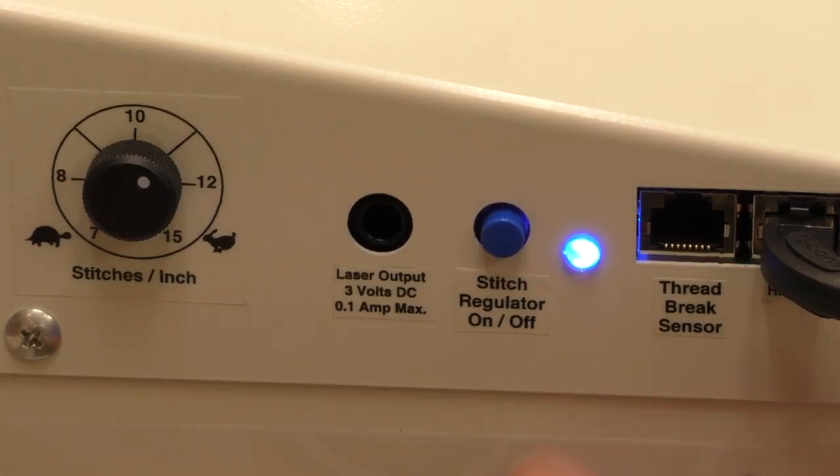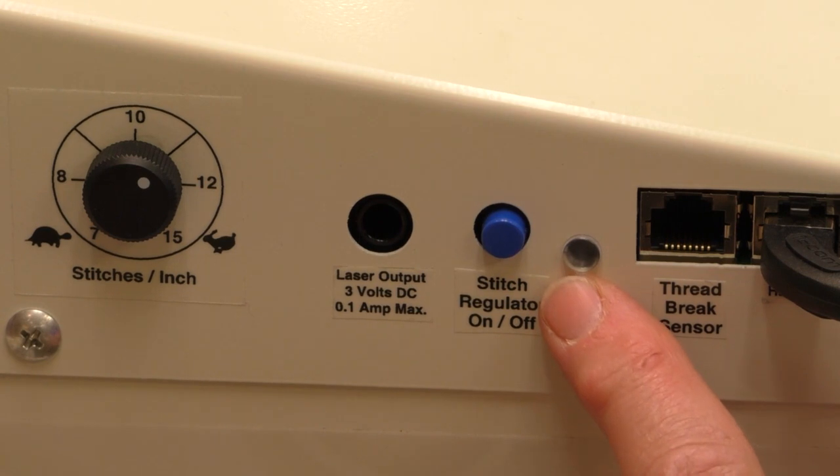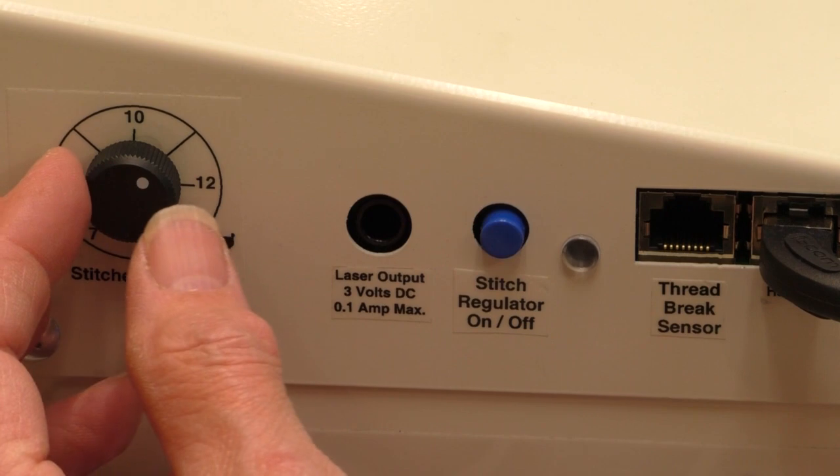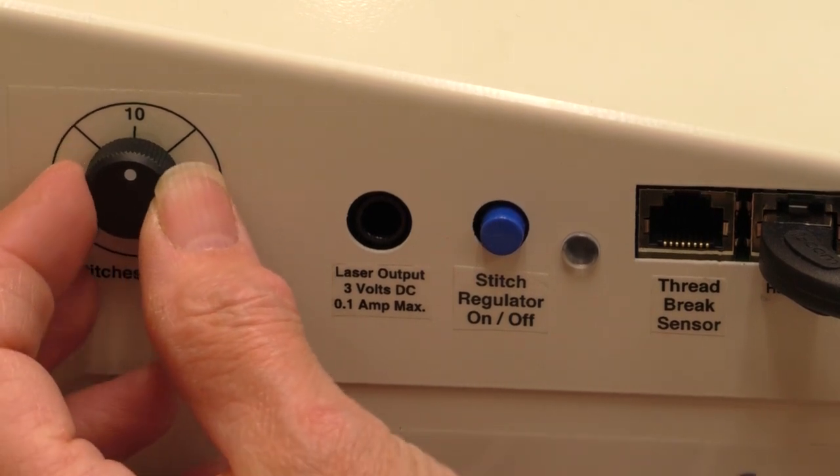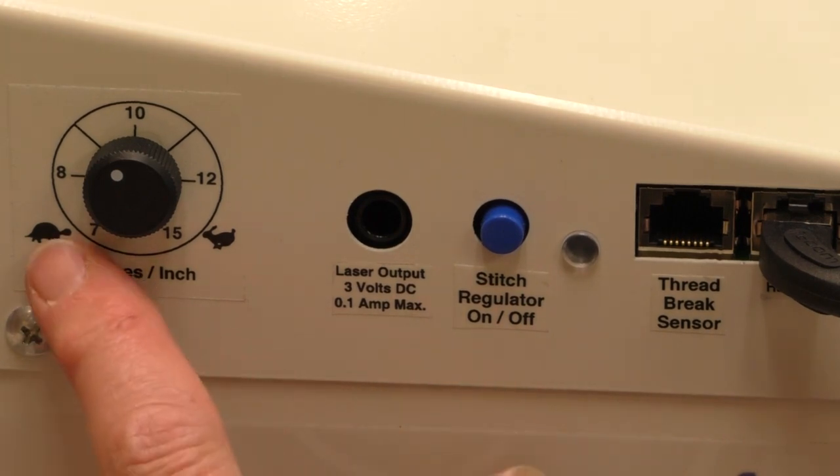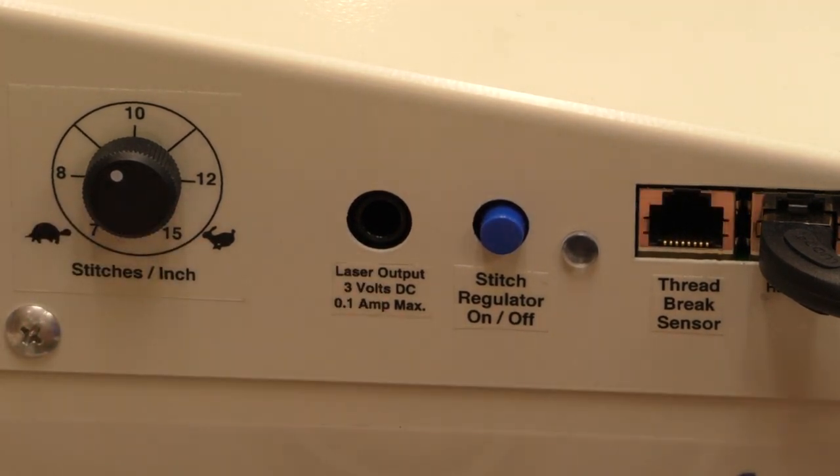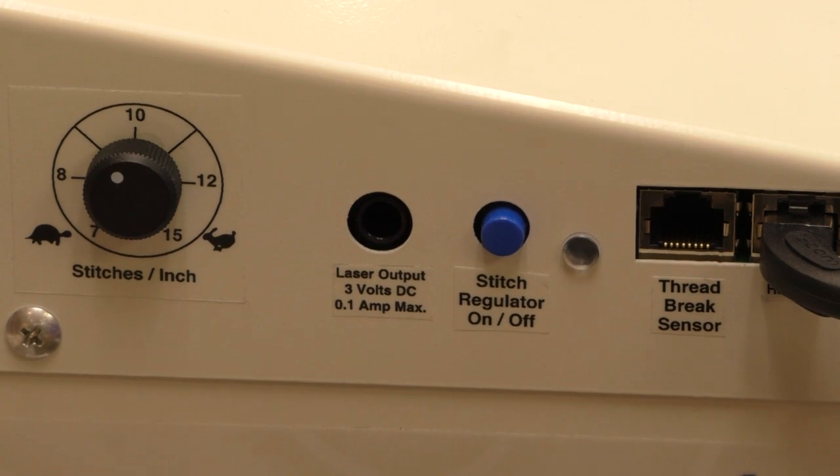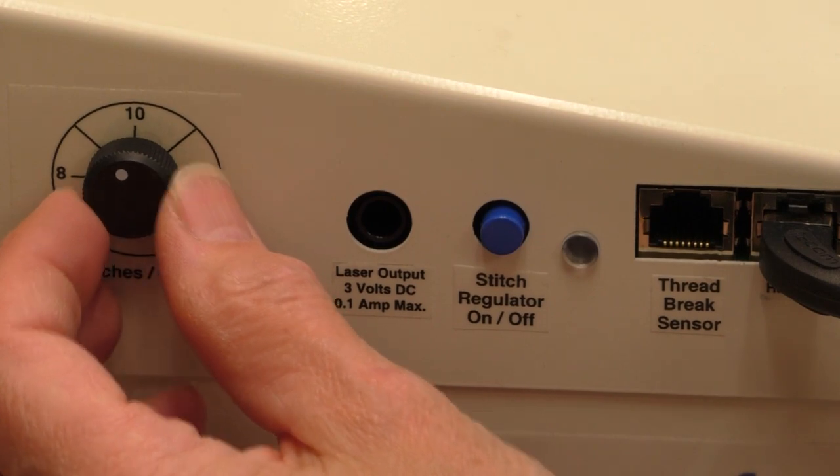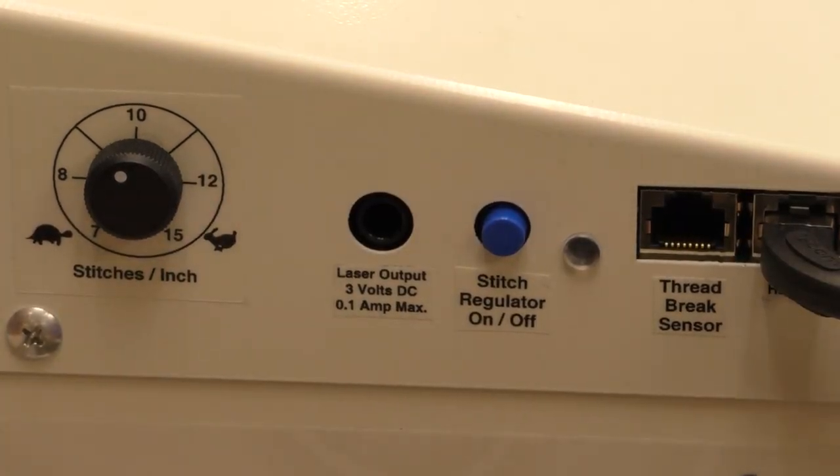On APQS Lucy and Lenny machines, to disengage the stitch regulator, simply push the blue button next to the LED light. That tells you that the stitch regulator currently is off. Then to use it for our basting techniques, you'll typically need to adjust your speed on the sewing motor. Closer to the turtle now means less speed, less motor speed when it's in constant sewing mode. Play with that adjustment just like I showed you on Millie so that you can find the right spot for the technique you're using.